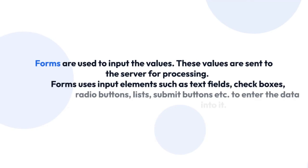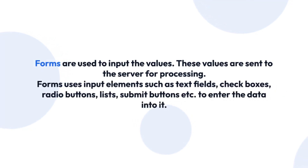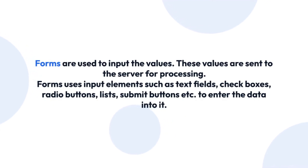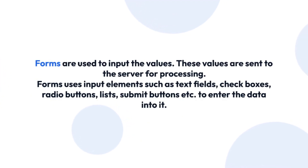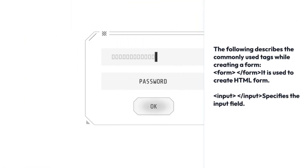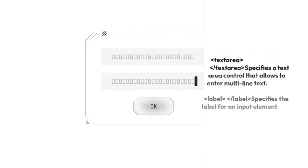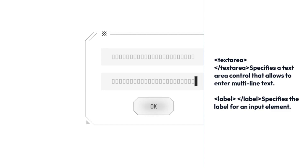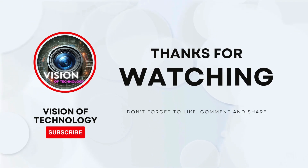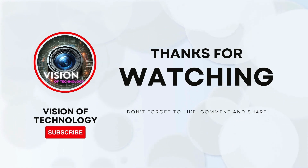Forms. Forms are used to input values, which are sent to the server for processing. Forms use input elements such as text fields, checkboxes, radio buttons, list boxes, and submit buttons to enter data. The form tag is used to create an HTML form. The input tag specifies the input field. The textarea tag specifies a text area. The label tag specifies the label for an input element. Thanks for watching — for more information, like and subscribe to Vision of Technology.